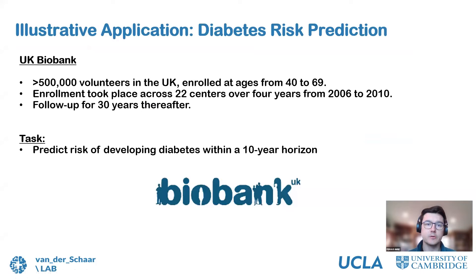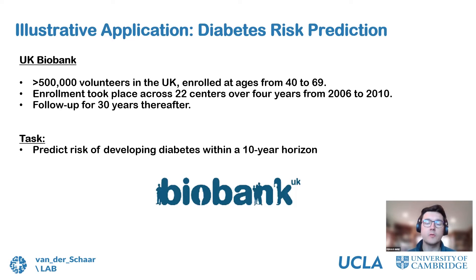Hopefully that was an interesting introduction to AutoPrognosis. Obviously the breast cancer example was almost a toy dataset and the performance was almost unbelievably high. However, we've also applied AutoPrognosis in an illustrative application for diabetes risk prediction using the UK Biobank dataset. UK Biobank consists of over half a million volunteers from the UK enrolled between ages 40 and 69, with enrollment across 22 centers over four years from 2006 to 2010. We now have between about 12 and 15 years of potential follow-up data.